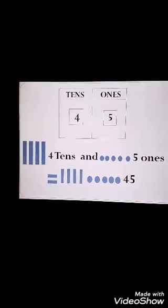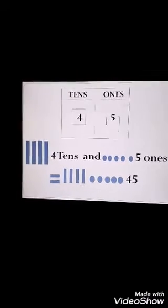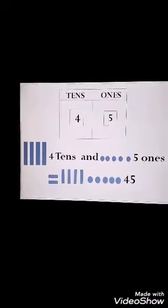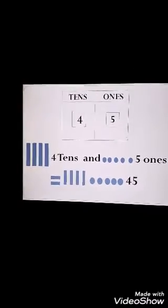The next number is forty-five. How to split forty-five in tens and ones? We have four tens and five ones, which makes forty-five.